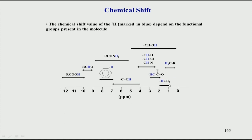If you go to methyl attached to a secondary or tertiary carbon, there is a slight downfield shift to the proton, but even then the hydrogen atom comes somewhere between 1 to 2 ppm. Once you start attaching electronegative groups — for example a ketone, if you have a carbonyl group and a CH attached to it — the hydrogen gets slightly downfield shifted. Remember, downfield means towards the left and upfield means towards the right. It comes somewhere in the range of 2 to 3 ppm, which is typical for a hydrogen attached to a carbon adjacent to a ketone group.